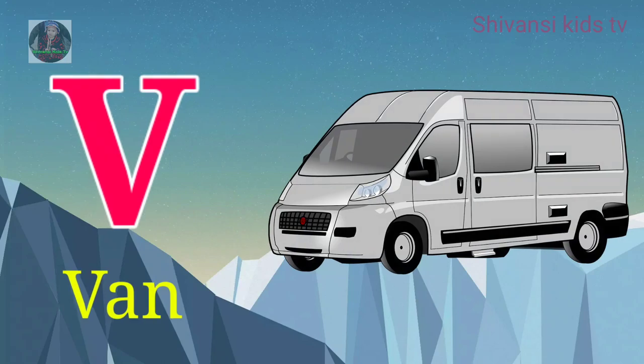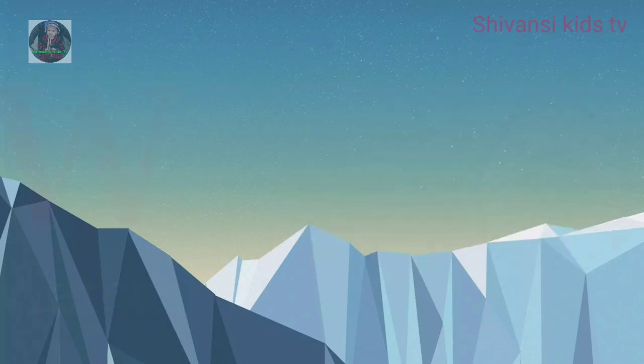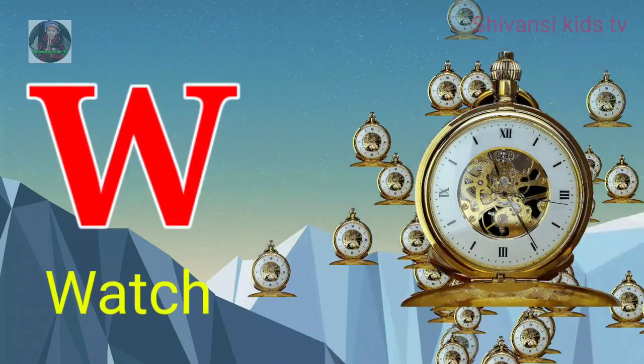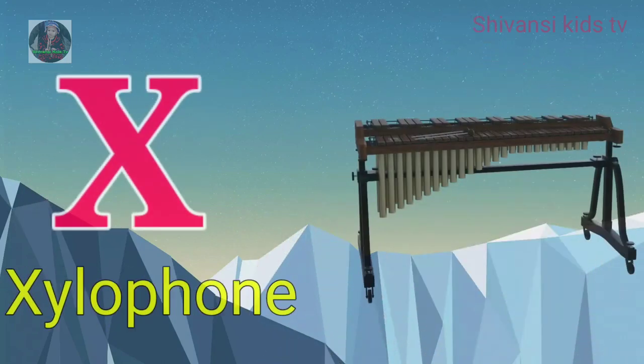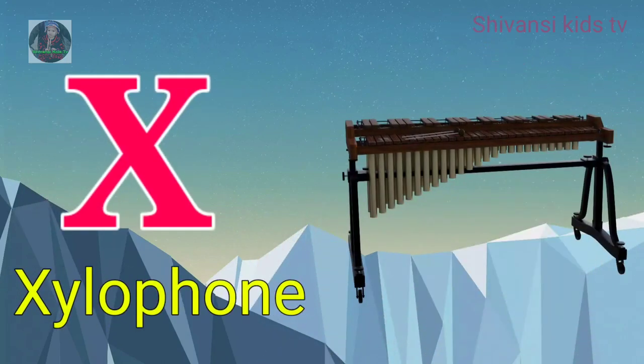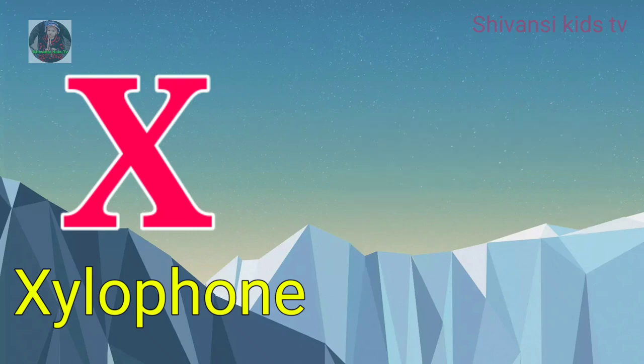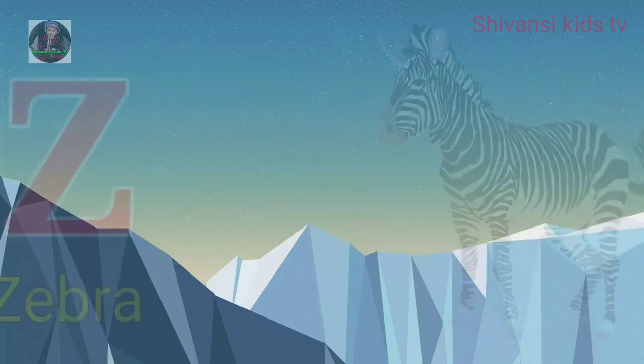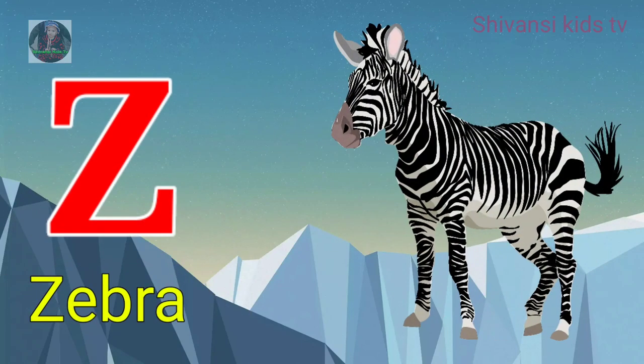V for van, W for watch, X for xylophone, Y for yard, Z for zebra.